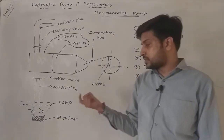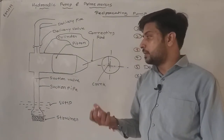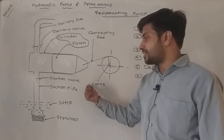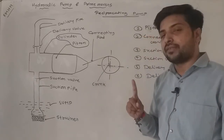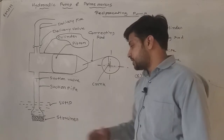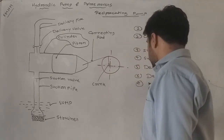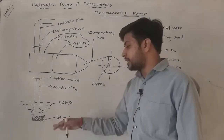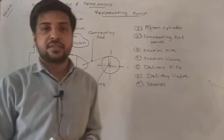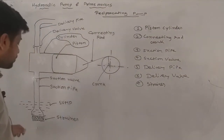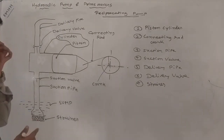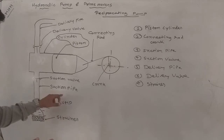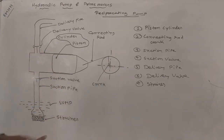The pump is connected via a suction pipe, which includes a one-way valve, also called a non-return valve. Below the strainer is also available in the water to filter out any solid particles. The components are: sump, suction pipe, suction valve, and piston cylinder.